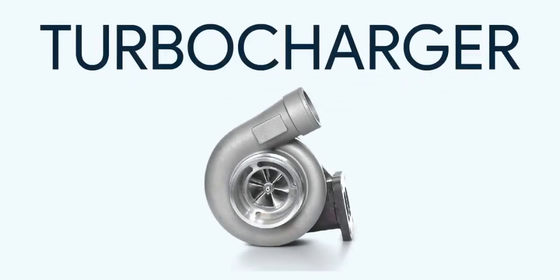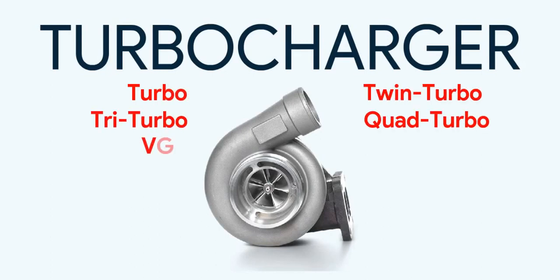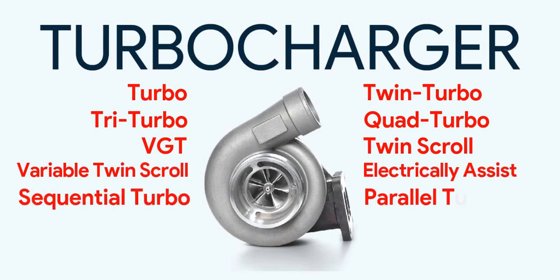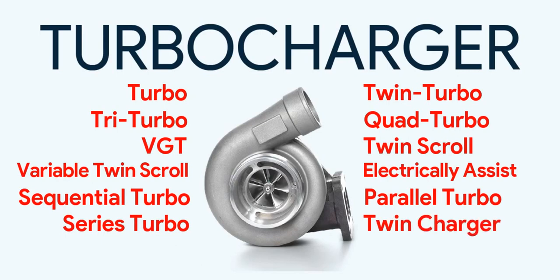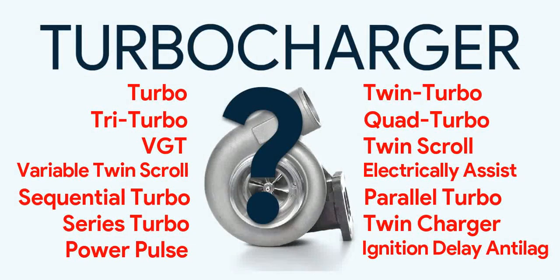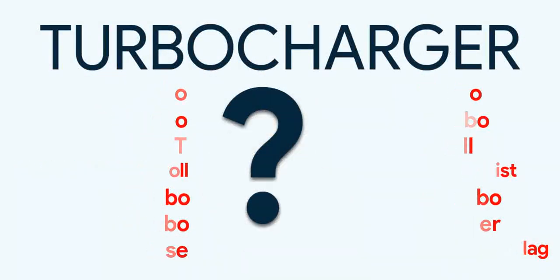Turbos. There are many types of them, and different layouts and different supplementary systems. Like single turbo, twin turbo, tri-turbo, quad turbo, variable geometry turbo, twin scroll turbo, variable twin scroll turbo, electrically assisted turbo, electric turbo, sequential turbo, parallel turbo, series turbo, twin chargers, a hybrid setup, Power Pulse, and ignition delay type anti-lag. Each having different advantages and limitations and specific uses. So, how do all these terms actually relate to performance? Let's untangle that in this video.